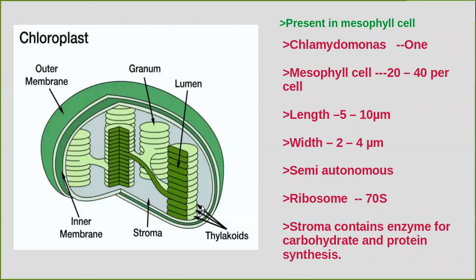Now we will discuss the detailed structure of chloroplasts. Majority of the chloroplasts are found in the mesophyll cells of leaves — the parenchyma tissue between the upper and lower epidermis. The chloroplasts may be lens-shaped, oval, spherical, or even ribbon-shaped in different organisms.